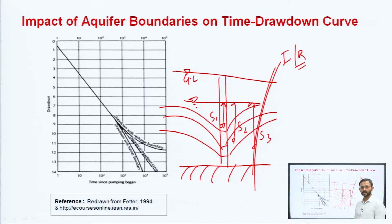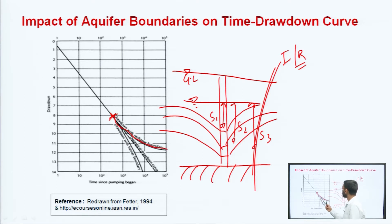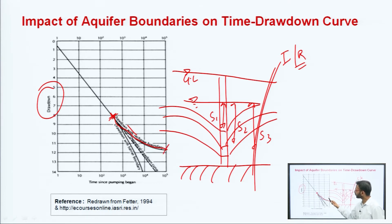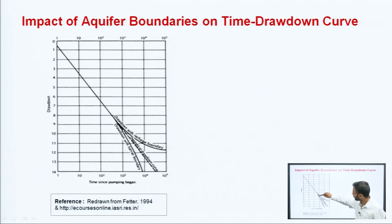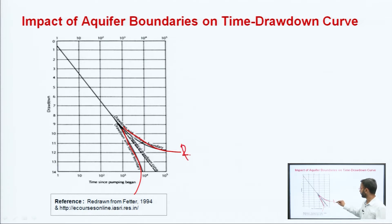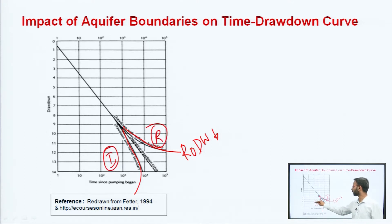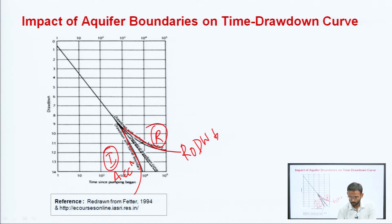Yadi recharge boundary hai, toh woh paani supply karati jaayegi. At a certain point of time, jou rate of drawdown hai, woh changes samay ke saath-saath itna zyada change nahi kar paa raha hai — it has been retarded. But yadi ab baat karein ki yeh ek impermeable boundary hai, toh wahaan pe paani ki kami dekhne ko milti thi. The drawdown curve kuch is tarike se downward accelerate kar jaayega. So in the case of impermeable boundary it has been accelerated, and for the recharge boundary the rate of drawdown has decreased — it has been retarded.